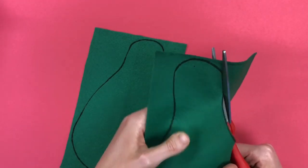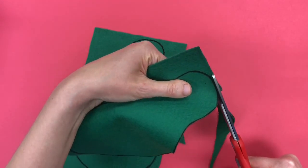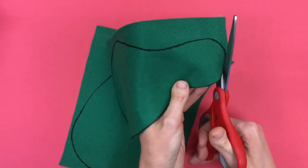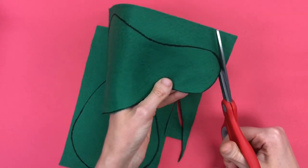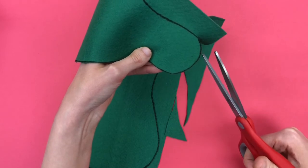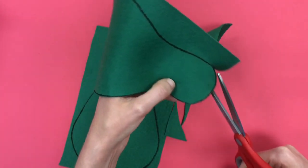The other thing that I'm doing is I am turning my felt as I cut so that my scissor hand can always be comfortable. It's a lot easier to turn the artwork and keep your scissor hand comfortable than it is to try and turn your scissors in all kinds of weird directions.